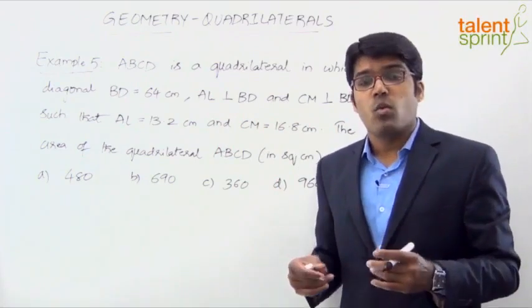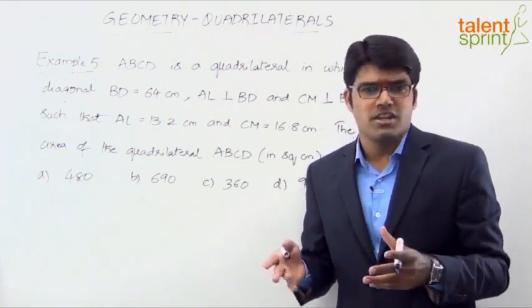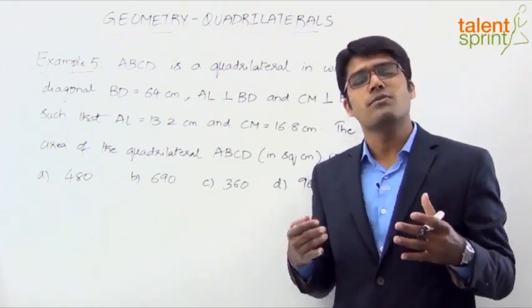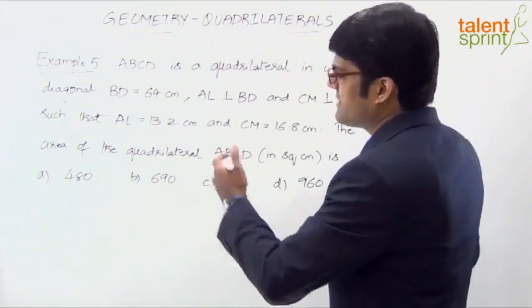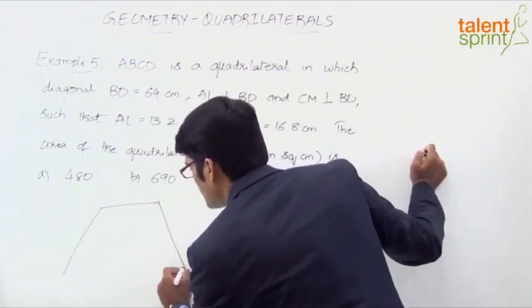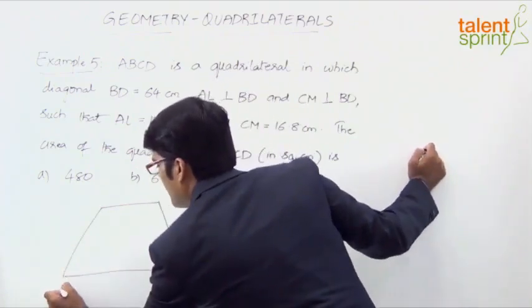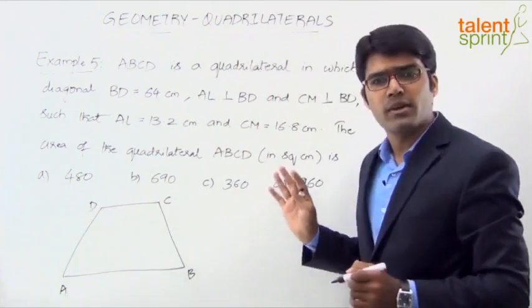ABCD is a quadrilateral. Now what type of quadrilateral has not been given, so it should be basically a four-sided closed figure. So let us draw some random shape here. Let us say this is the quadrilateral A, B, C and D.